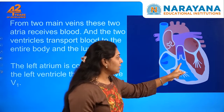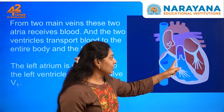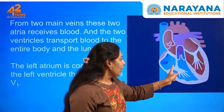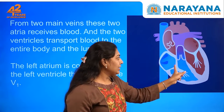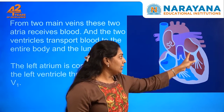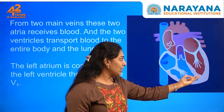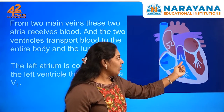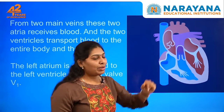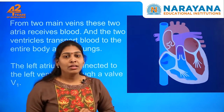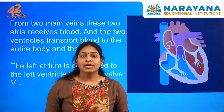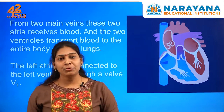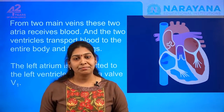When the auricles contract, blood enters the ventricles; when the ventricles contract, blood enters the blood vessels. Hope you understand the structure of the heart and how blood moves inside it. Thank you.